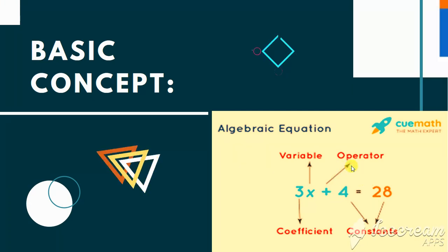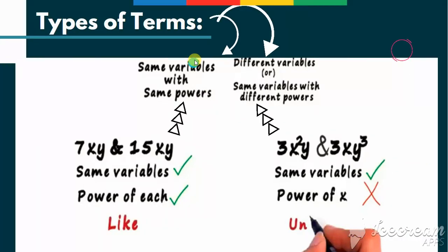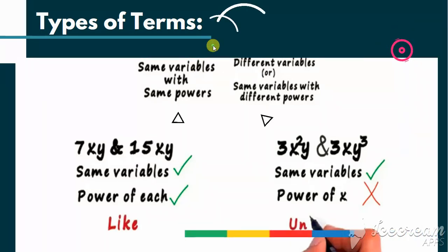Is it okay? So let's move on. Types of terms. There are two types of terms: like terms and unlike terms.